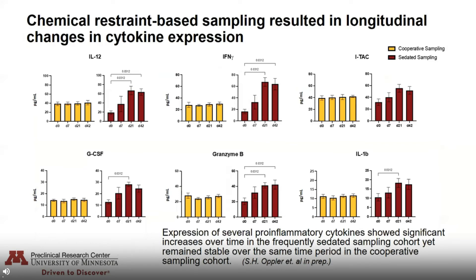To take a closer look at the physiological influences of intensive handling technique, we compared serum cytokine expression across cohorts. Chemical restraint-based sampling resulted in longitudinal changes in cytokine expression. In the figures presented, the yellow bars represent cooperatively sampled animals and the red bars represent sedated animals on Days 0, 7, 21, and 42 across the study. We found that expression of several pro-inflammatory cytokines showed significant increases over time in the frequently sedated sampling cohort, yet remained relatively stable over the same time period in the cooperative cohort. These apparent effects of frequent restraint-based handling may complicate study interpretation by making it difficult to distinguish test article or disease-related changes from unintentionally provoked physiological changes — again providing an example of how model-imposed variables can influence scientific outcomes.